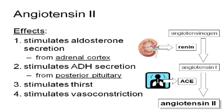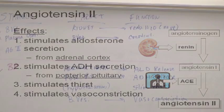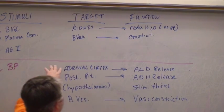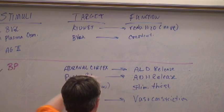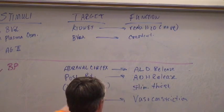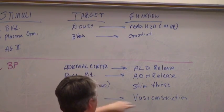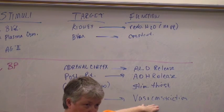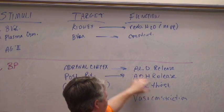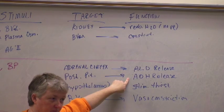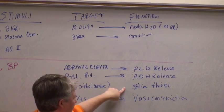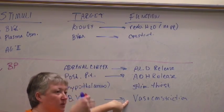Angiotensin II is extremely powerful and does four things: it stimulates release of aldosterone, it stimulates ADH release from the posterior pituitary, it makes you thirsty, and it stimulates vasoconstriction. The result is that kidneys reabsorb water, you drink more water because you're thirsty, and the vessels constrict — all of which raises blood pressure.